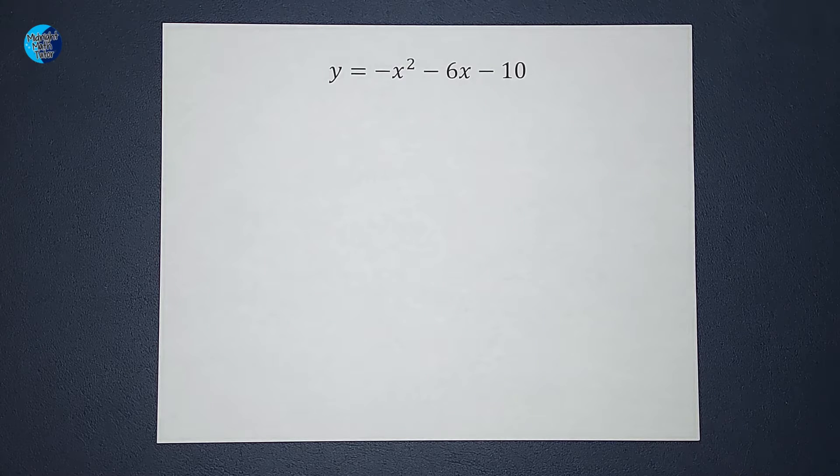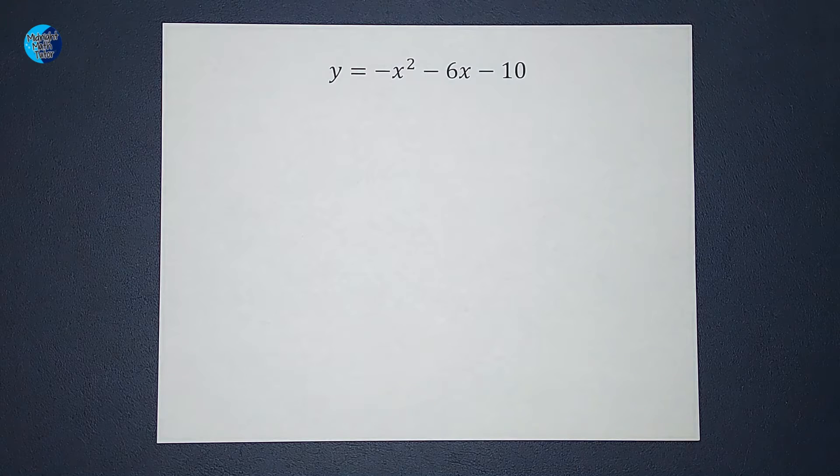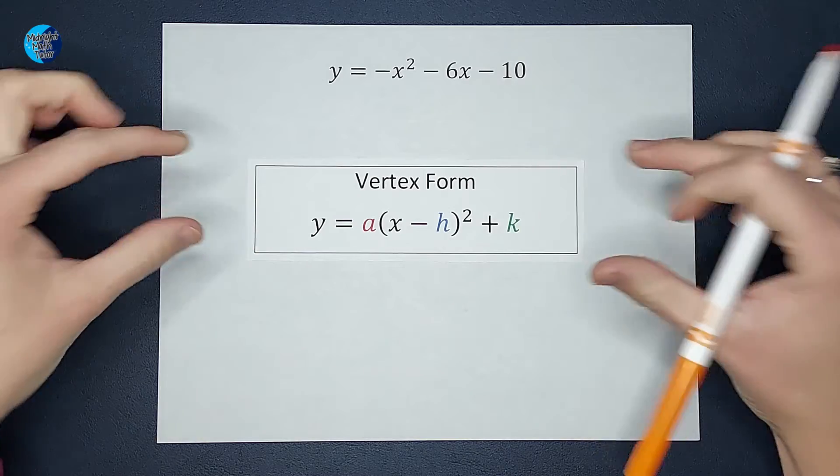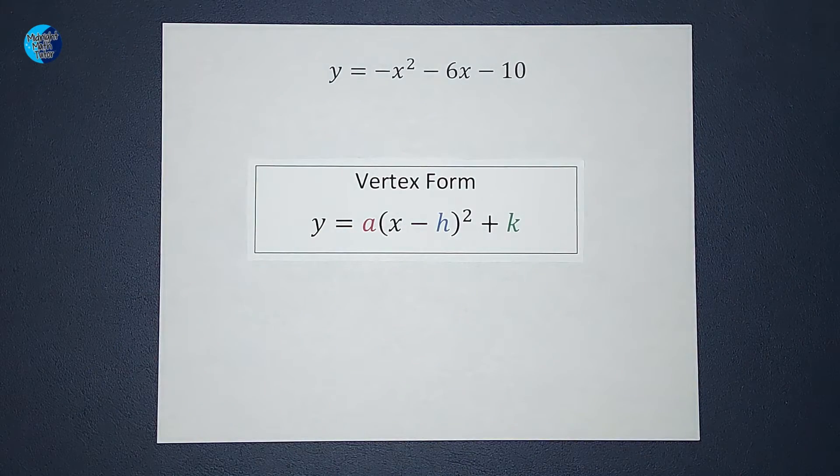Let's do a really quick review of why we want to do this. So if I wanted to graph this, the x squared is making me think parabola. And the easiest way to graph a parabola is when our equation is in vertex form. So that's why we're trying to get there.